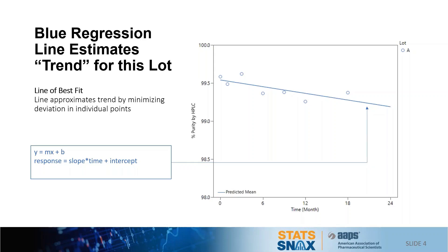This plot shows stability data for lot A and a fitted regression line, which represents the predicted mean of the individual points as defined in the figure legend. The regression line, or the line of best fit, has a simple linear equation.